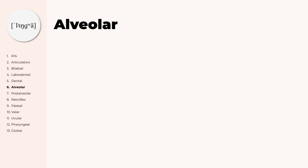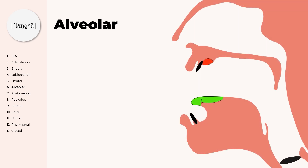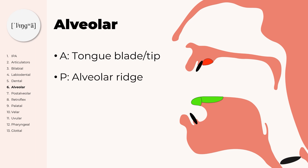Alveolar consonants are produced with the tongue blade or tongue tip being active and the alveolar ridge being the passive part. The alveolar ridge is the part directly behind the upper teeth. Examples for alveolar consonants are N, T, S, L, or R.